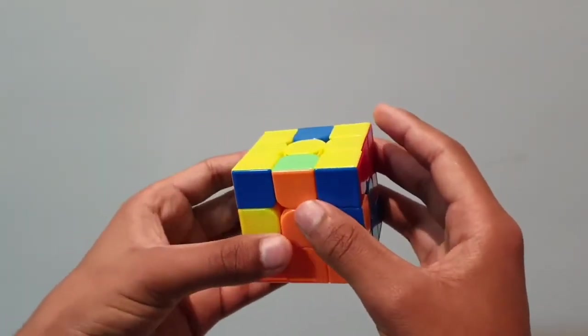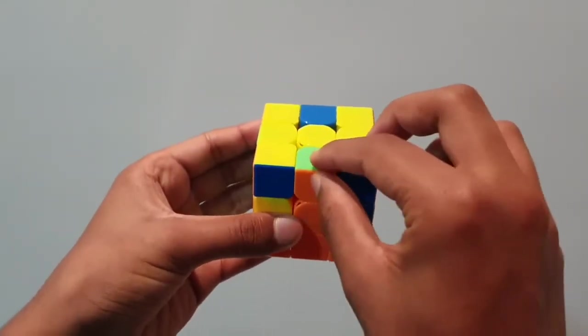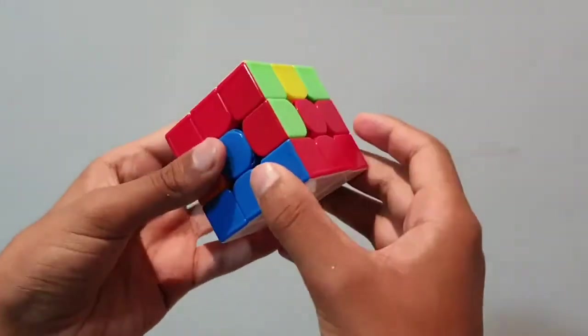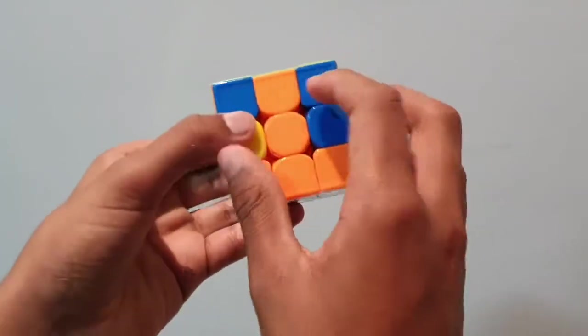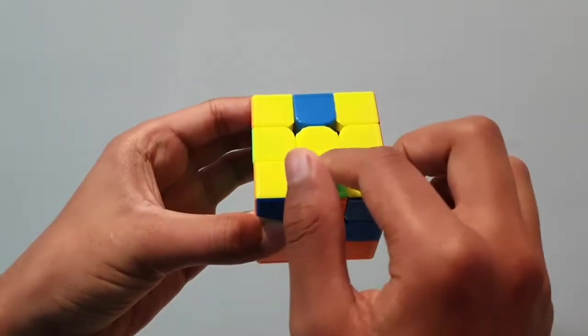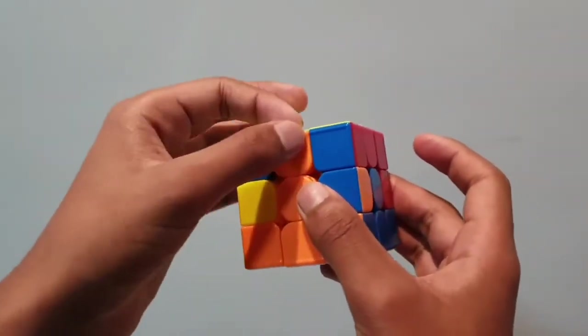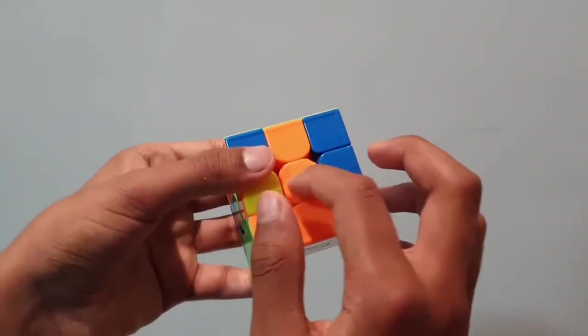In the next step, we have to look at these top edge pieces. We have to slot these edge pieces into the corresponding areas. For example, we can take this one piece. It's orange, and the top piece is green. So this piece is actually meant to be over here, in between the green and orange center pieces.